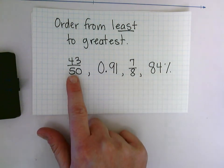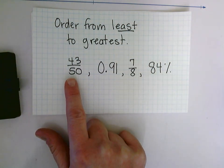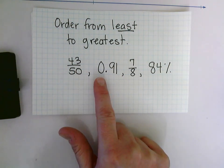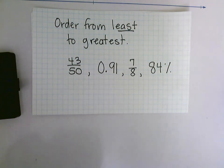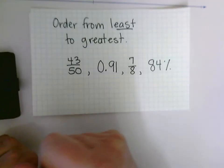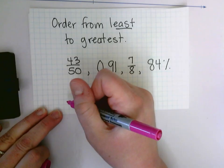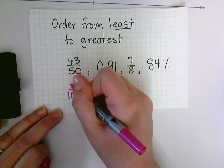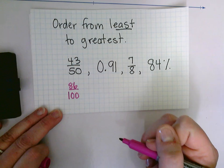So 43/50, I want to change that to a percent. Well, if I know that 50 times 2 is 100, that gives me my denominator of 100. I can also do 43 times 2, which would give me 86/100.